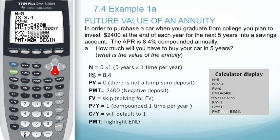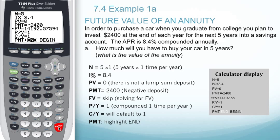Skip future value because we want to solve for that. The payments per year and compounding periods per year will be one for annual. Arrowing back up to future value, we hit Alpha and Enter. This gives us a future value of $14,192.58.